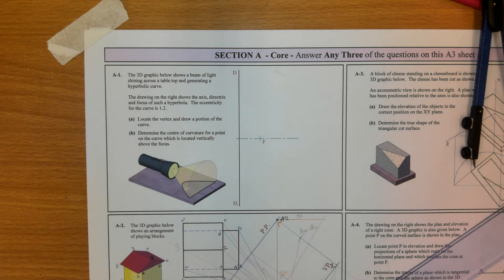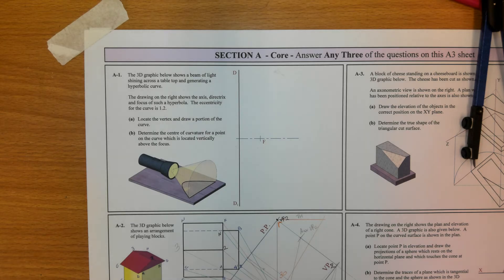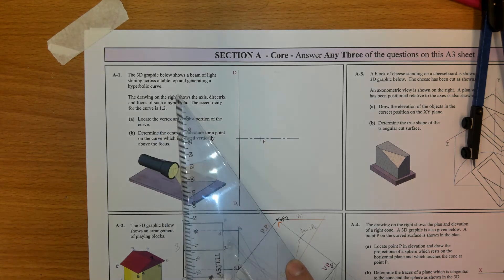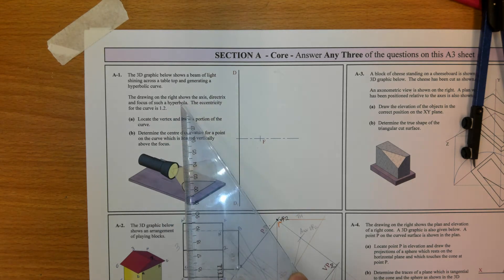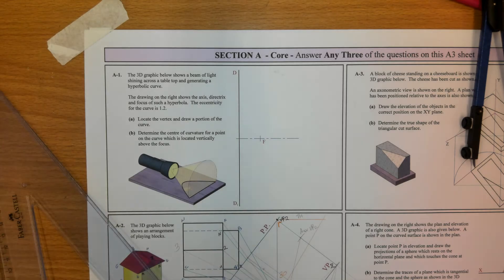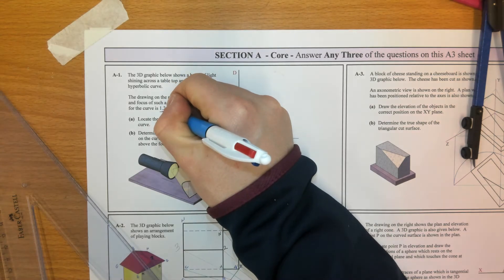Welcome to this video on 2009 question A1. The 3D graphic shows a beam of light shining across the tabletop generating a hyperbolic curve. The drawing on the right shows the axis, directrix, and focus of such a hyperbola. The eccentricity of the curve is 1 is to 2.